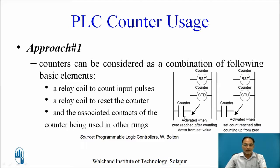In a down counter, the counter contact is activated when 0 is reached after counting down from the set value. In an up counter, the counter contact is activated when the set count is reached after counting up from 0.